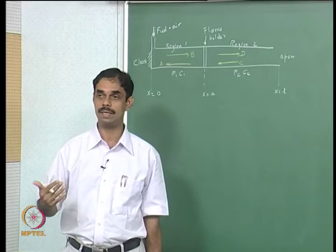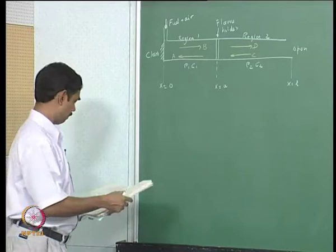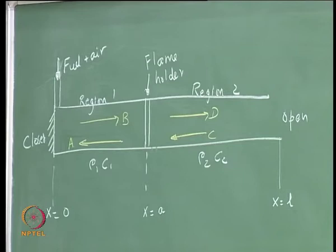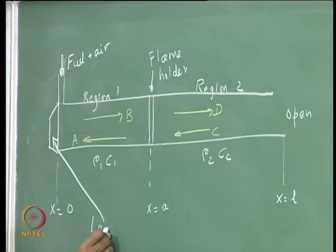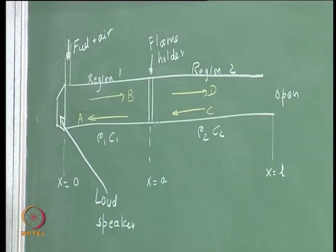Having come this far, I will give you a homework problem on active control - a very simple problem. What we wish to do is to replace all the boundaries. In this case it is easiest to replace the closed boundary with a loudspeaker. Let us say we keep a loudspeaker here and we make it vibrate in some manner which is convenient to us, or which is such that it will make the system stable.